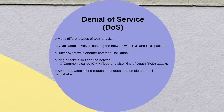There are many different types of denial of service, or DoS, attacks. This involves flooding the network with TCP and UDP packets. A buffer overflow is another common DoS attack, which overloads a network with extraneous traffic. Ping attacks also flood the network, and a SYN flood attack sends requests but does not complete the full handshake.